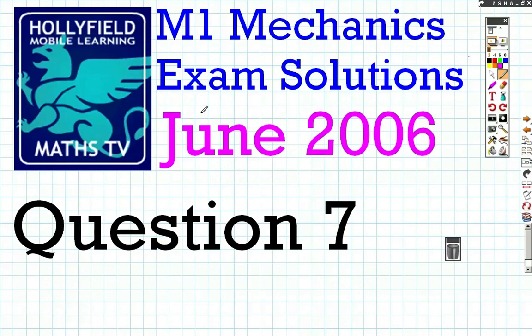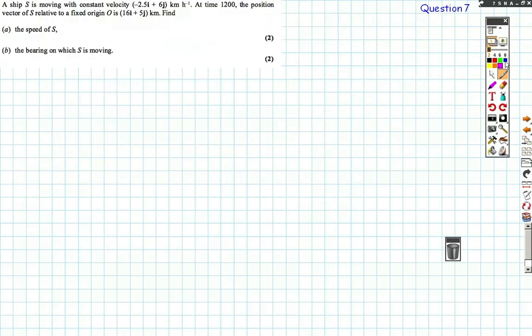Okay, mechanics paper, M1 paper, June 2006. Let's look at question 7, see how this goes. Now, vectors questions - lots of people find vectors questions hard, but if you follow a few simple methods, then you can find out exactly what's going on in a quite straightforward manner, hopefully.